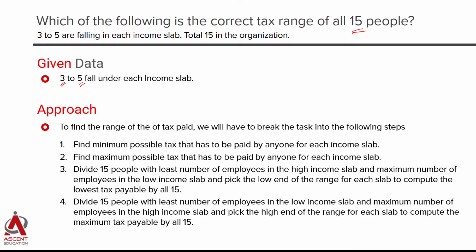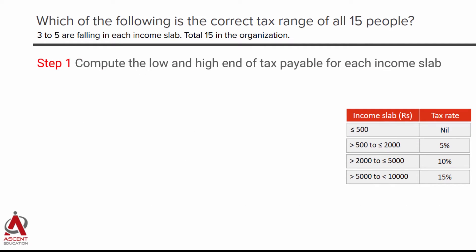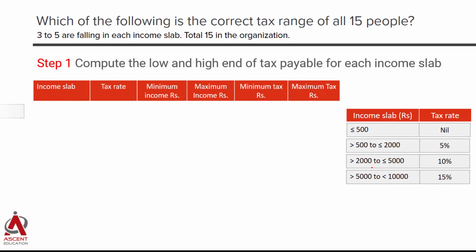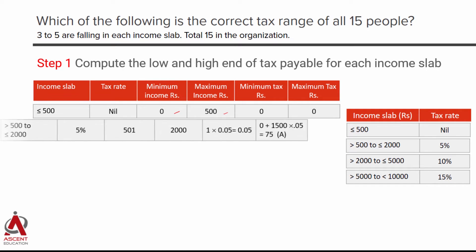Let's compute minimum and maximum tax for each slab. Slab 1: income less than or equal to 500. The minimum income is zero and the maximum is 500. There is no tax regardless, so whether your income is 0 or 500, your tax is zero for this slab.